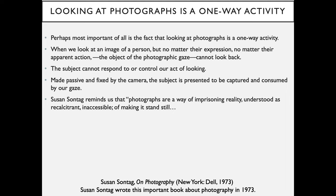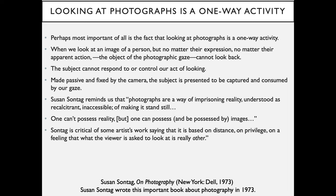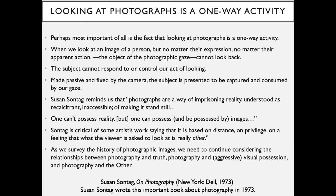Susan Sontag reminds us that photographs are a way of imprisoning reality — understood as recalcitrant, inaccessible — of making it stand still. One can't possess reality, but one can possess, and be possessed by, images. Sontag is critical of some artists' work, saying that it is based on distance, on privilege, on a feeling that what the viewer is asked to look at is really 'other.' As we survey the history of photographic images, we need to continue considering the relationships between photography and truth, photography and aggressive visual possession, and photography and the other.